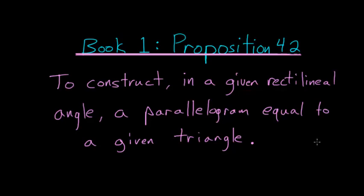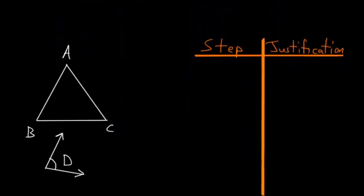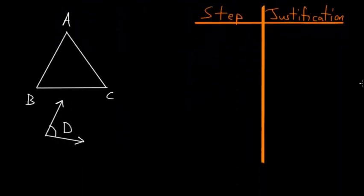For Book 1, Proposition 42 of Euclid's Elements: to construct in a given rectilineal angle a parallelogram equal to a given triangle. This is a construction proof where we start with triangle ABC and some given angle D.